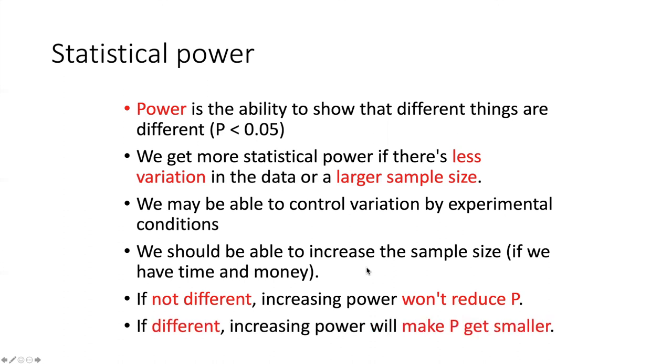p will not get below 0.05. On the other hand, if the things that we're measuring really are different, then increasing the statistical power in our experiment will make p smaller and at some point, p will be less than 0.05 if the things really are different.